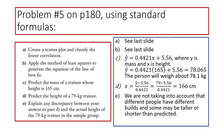Part C: predict the mass of a trainee whose height is 165 centimeters. This is a really good question because it allows you to use your model to make a prediction, which is really the whole point of doing all this. When I did it, I came up with roughly 78.1 kilograms, or 78.065 to be exact, using the first formula.